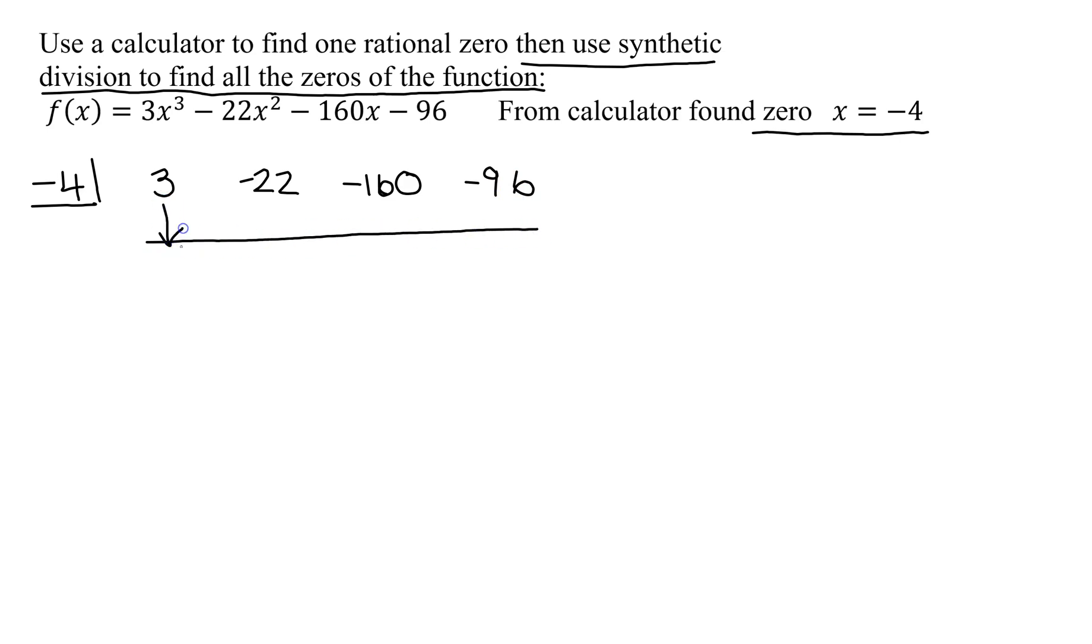So we bring down the 3 as is. Then multiply 3 times negative 4 and get negative 12. And now we are going to add negative 22 and negative 12. We get negative 34. Repeat. Negative 34 times negative 4 is positive 136. Add negative 160 to positive 136. I get negative 24. And finally, negative 24 times negative 4 is positive 96. Negative 96 plus 96 is 0. Remember, this is the remainder. And we have just shown at this point that x equals negative 4 is, in fact, a zero of this polynomial. Since when I did the division, I got a remainder of 0.